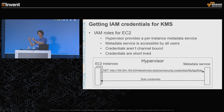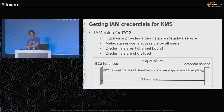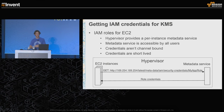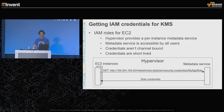Now that you have all your keys moved over to a key management service, you have another problem: how do you get the credentials to be able to talk to the key management service? The solution is to use IAM roles for EC2. This allows you to tell IAM that you want a particular role to have access to a particular set of keys within KMS, and then you associate that role with a set of instances.